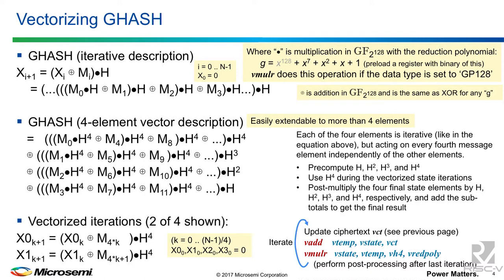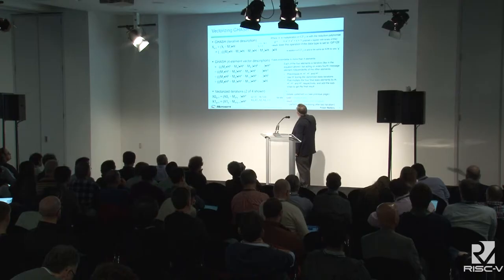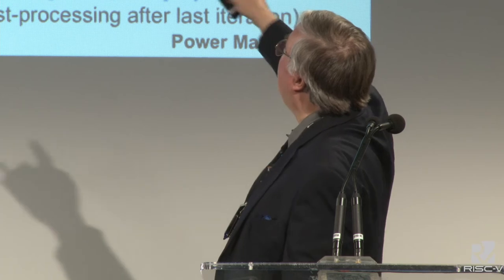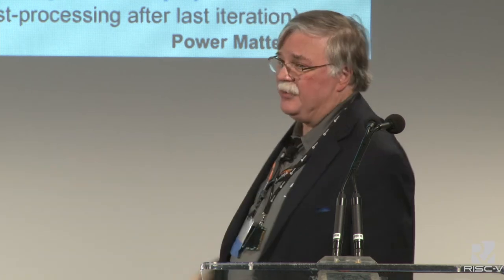This uses the special form of multiply with the reduction — you specify the reduction polynomial, which is defined in the GHASH standard within AES-GCM. The degree-128 term is assumed to always be one, so you don't need 129 bits; the leading bit is implied. Only four other bits out of the 128 are actually set to one.